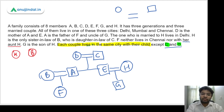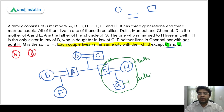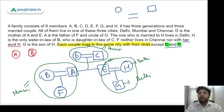Now we determine where everyone lives. The one married to H lives in Delhi, so E lives in Delhi. Since each couple lives in the same city with their child, H also lives in Delhi, and G also lives in Delhi. F neither lives in Chennai nor with her aunt H, so F is not in Delhi or Chennai — F and her family live in Mumbai. That leaves C and D, who live in Chennai.